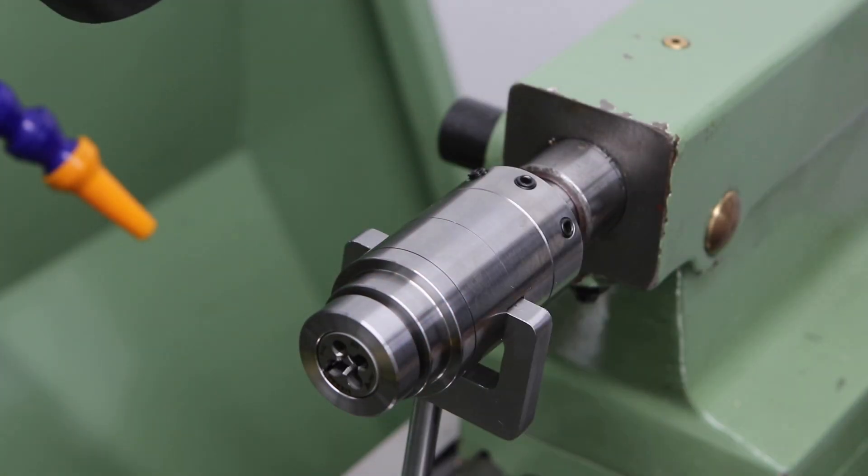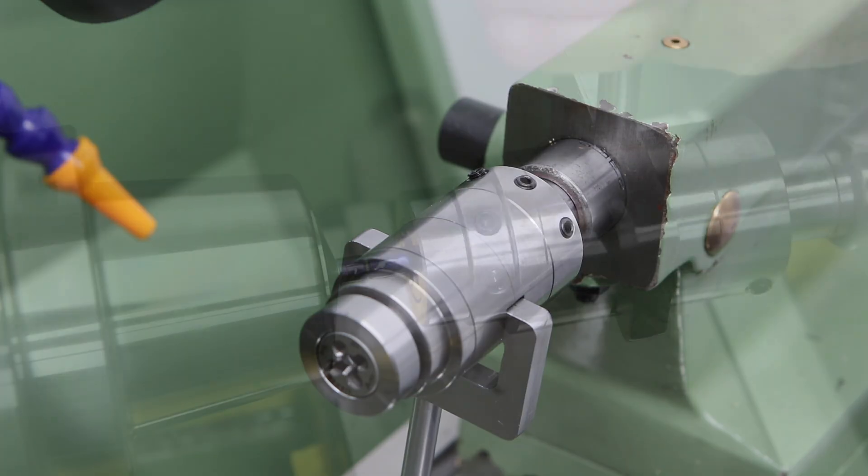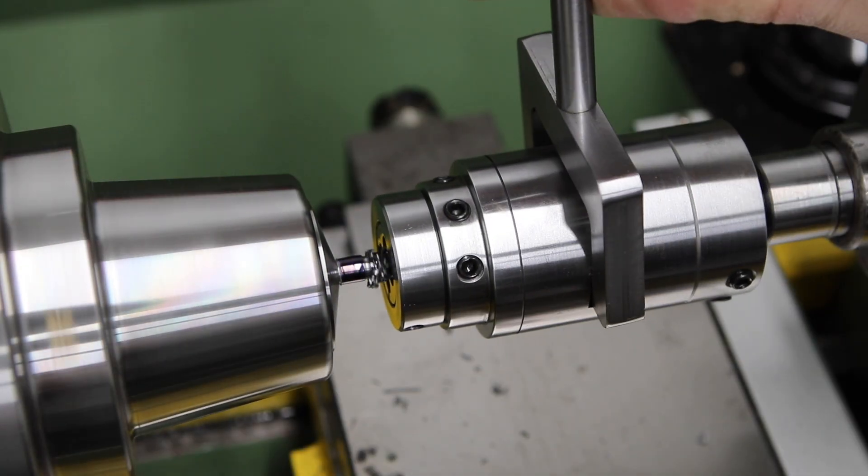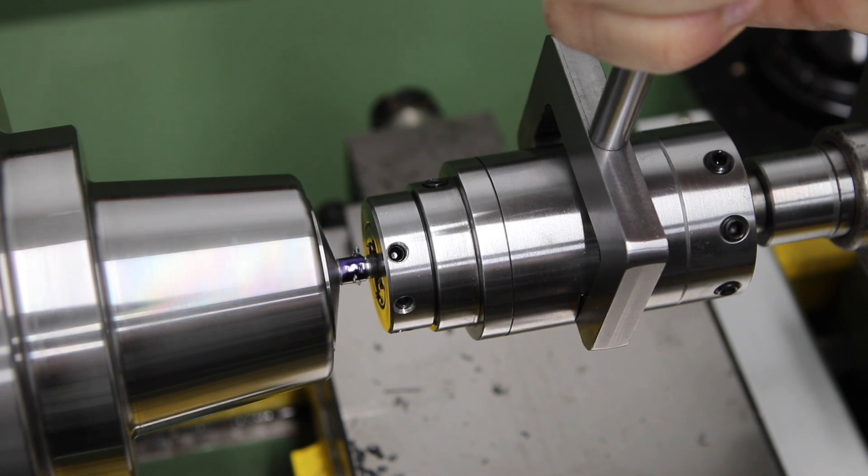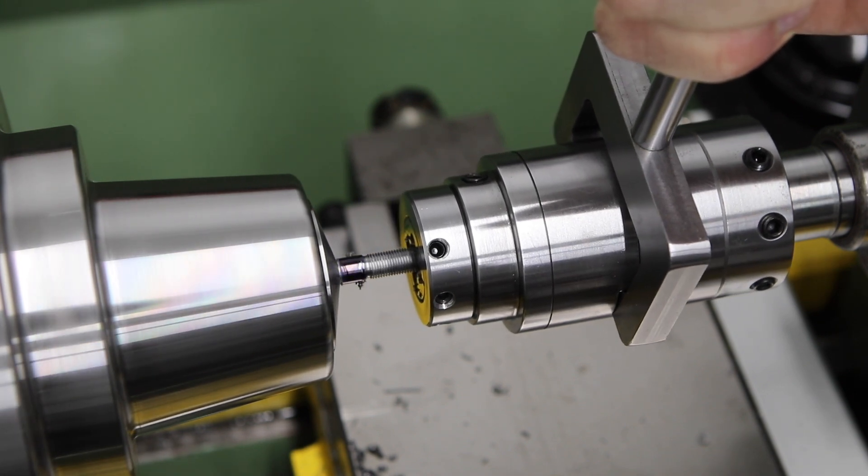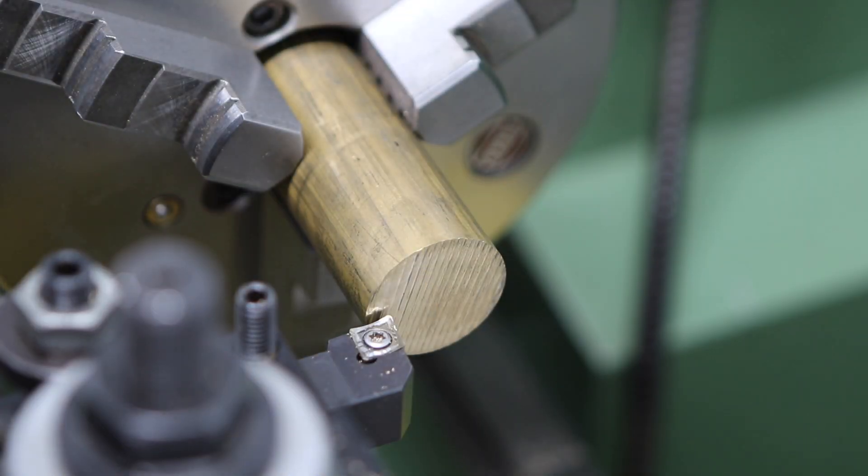I'm going to be using my shop made tail stock die holder here. This one takes imperial dies and I've had a few viewers comment on it so what I'll do in a future video is to make a metric version and I'll do that on camera. So if you're interested please hit the subscribe button so you don't miss out.